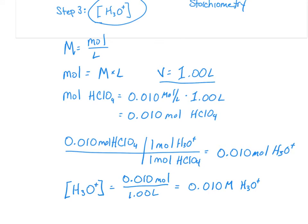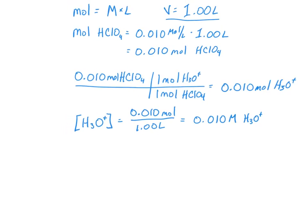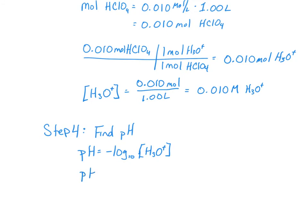So now step four, we have to find the pH. Now we know from the second video that pH is equal to minus log base 10 of the concentration of H3O+. And so our pH, in this case, is equal to minus log base 10 of 0.010 molar. And so our pH is equal to 2.